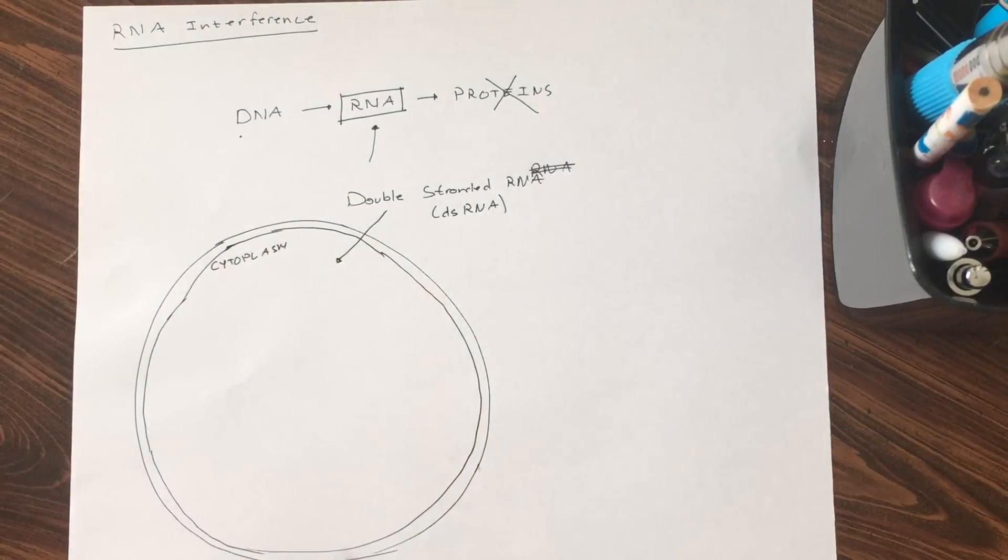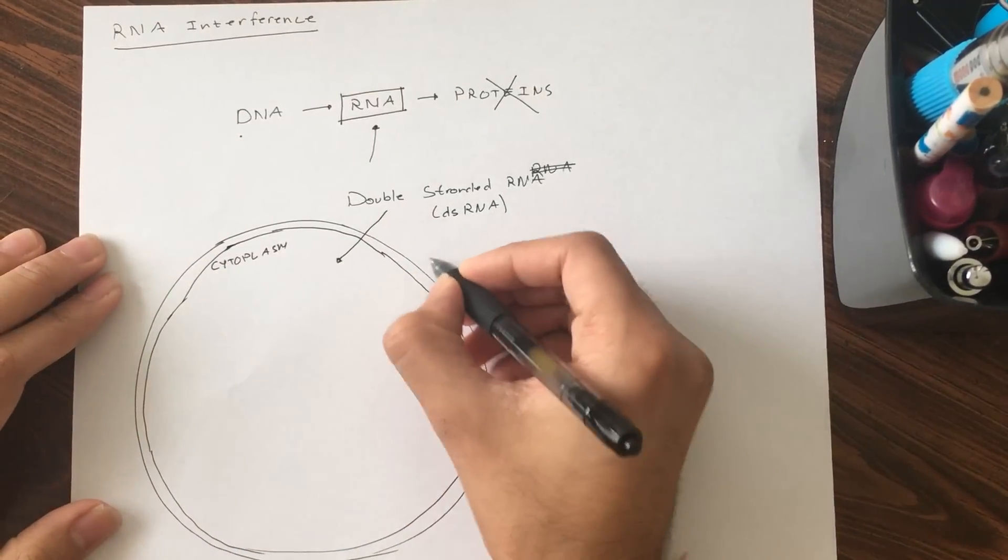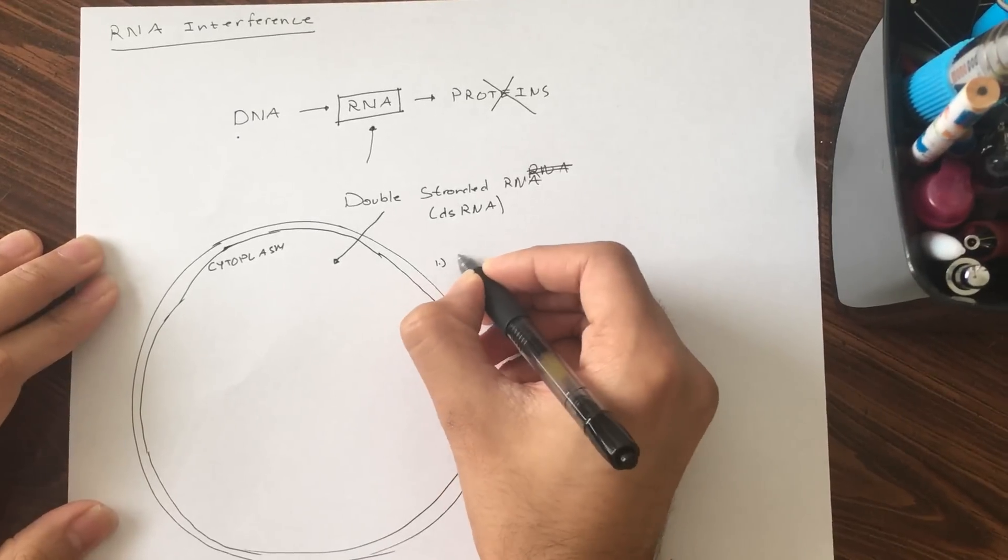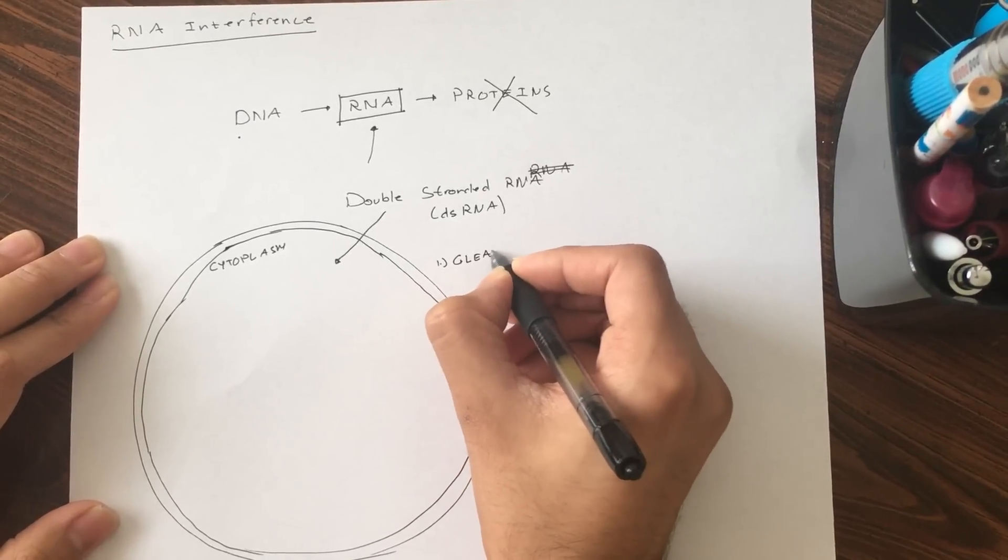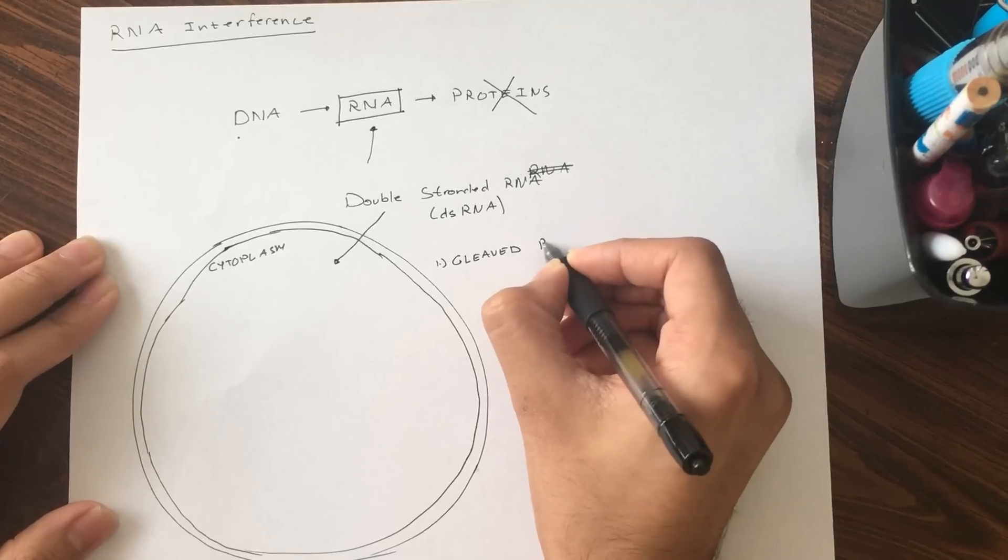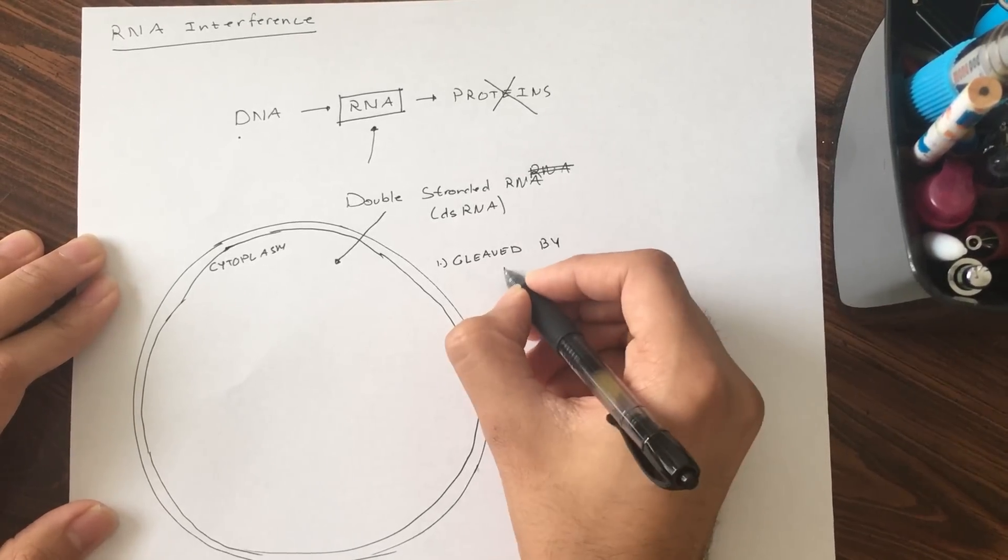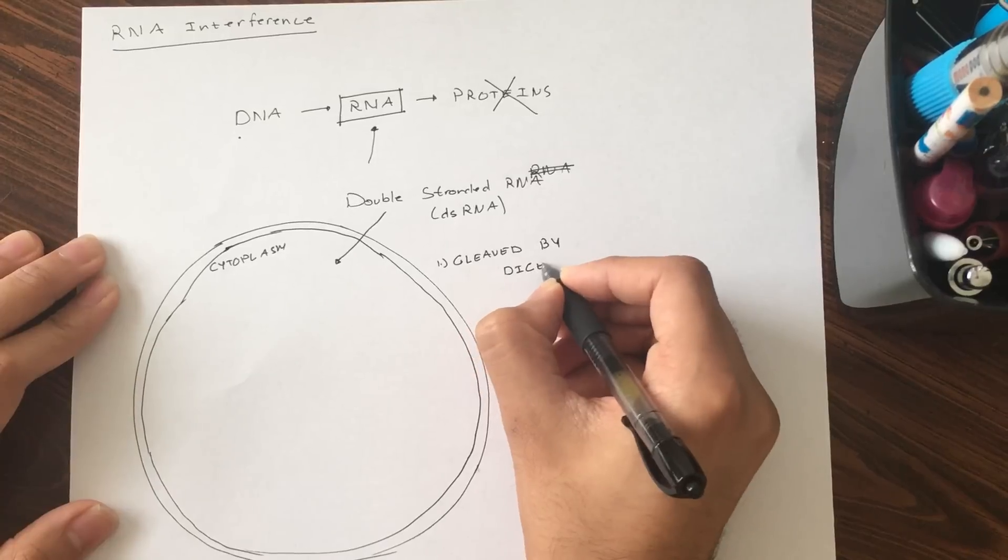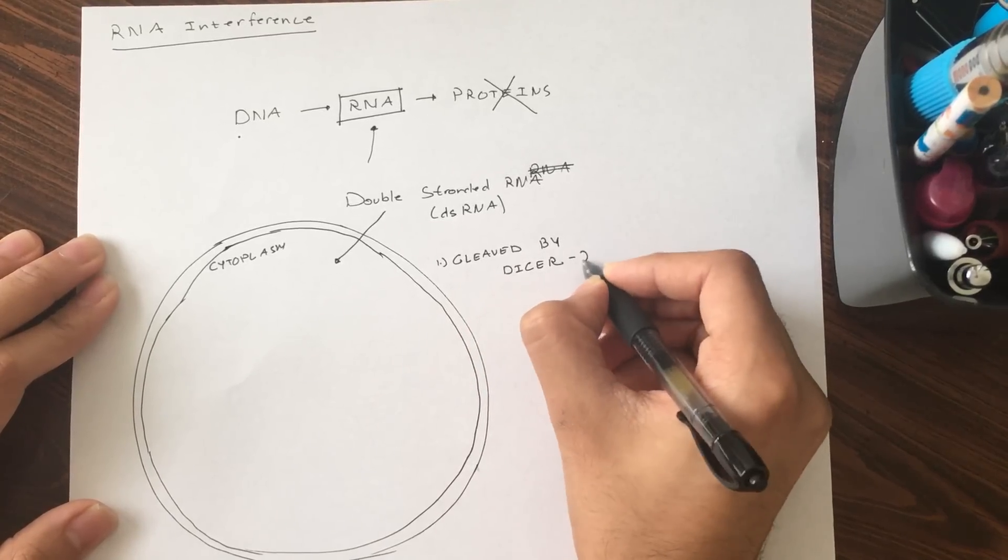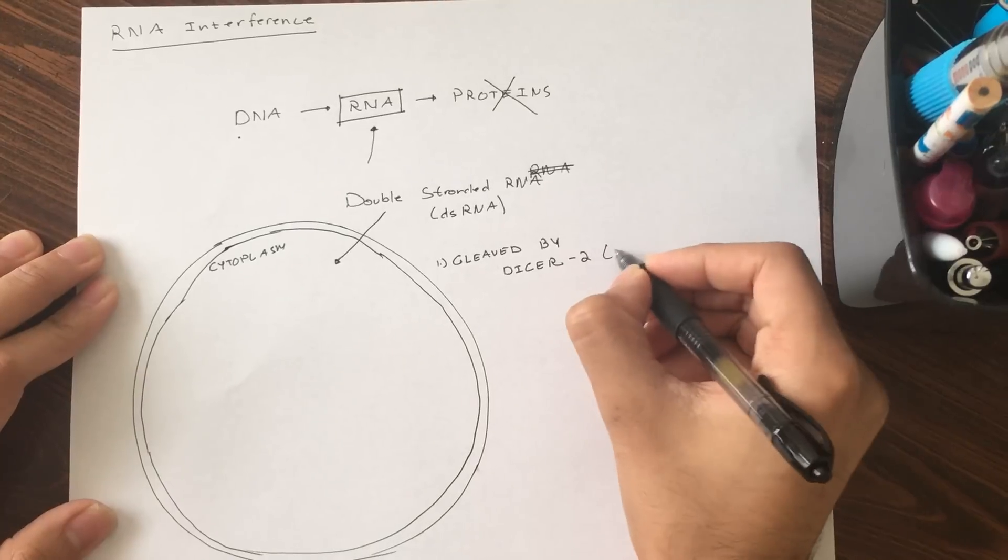The first thing that happens when this dsRNA or double-stranded RNA gets into the cell is that it gets automatically cleaved by a ribonuclease known as DICER or DICER2. This is a ribonuclease.